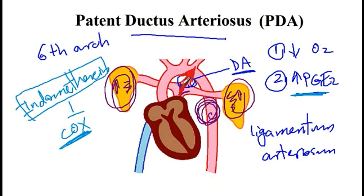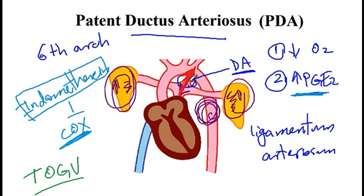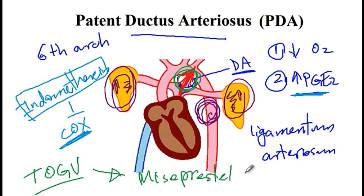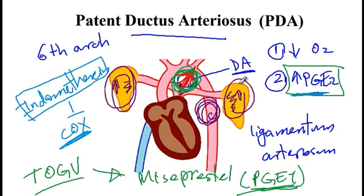On the other hand, there are situations where you want to keep the ductus arteriosus open — for instance, in transposition of the great vessels, which is incompatible with life unless there is some other abnormality like an atrial septal defect, ventricular septal defect, or patent ductus arteriosus to allow mixing of blood. In these patients, you can provide misoprostol, a prostaglandin E1 medication, to keep the ductus arteriosus patent.